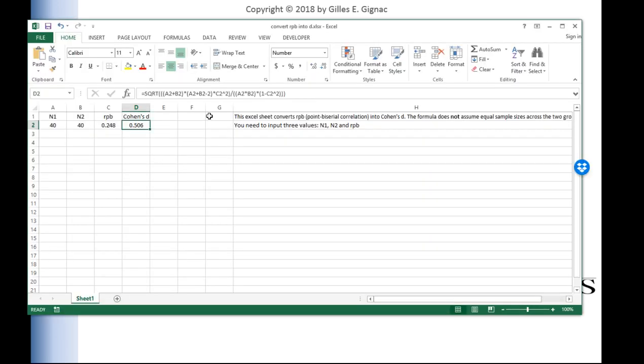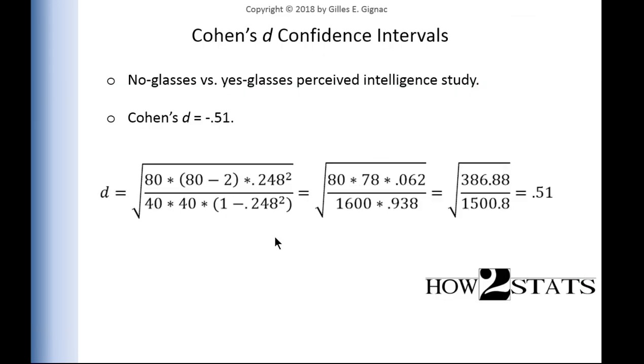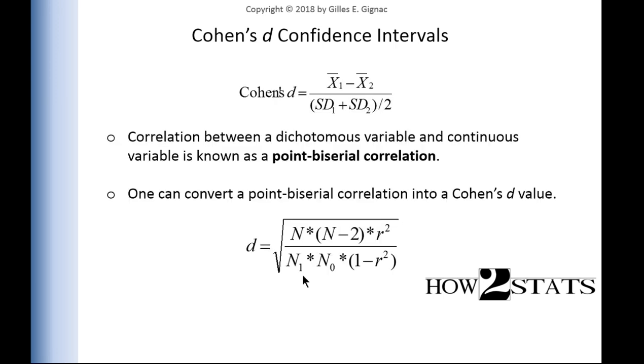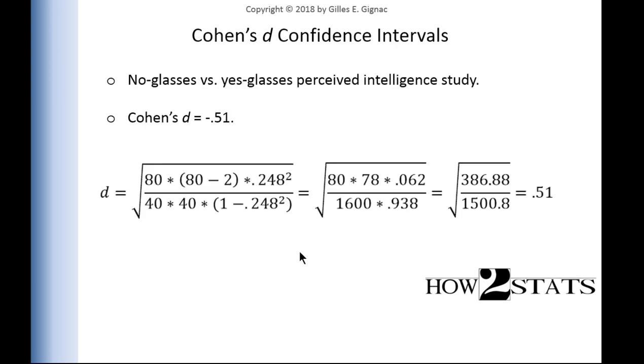So instead of using this formula and having to calculate it by hand, what I did is I created an Excel sheet that does it for me. So here's the formula inputted in the Excel function. And all I need is sample size and the point-biserial correlation. Now I should say that the Cohen's d formula that I'm using here to get Cohen's d from the point-biserial correlation, it takes unequal sample size into consideration. And that's very important because there are formulae floating around in textbooks and online that will suggest that you can convert the point-biserial into Cohen's d, but they do not take the possibility that you might have unequal sample sizes. So it's really important that you use this formula here to do your conversion because it'll be accurate if the sample sizes are equal and it'll be accurate if they are not.